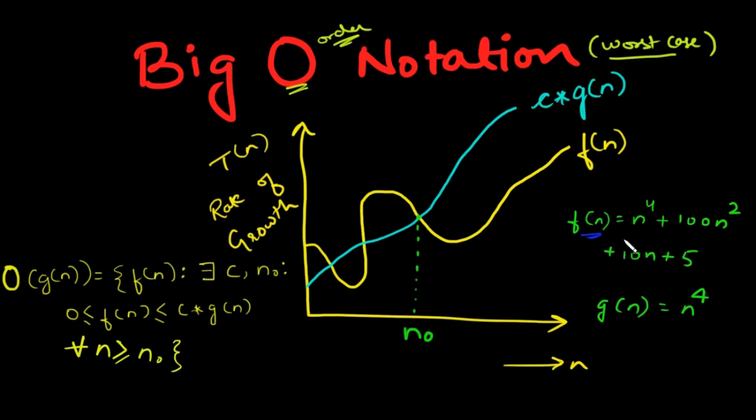Generally, it is represented as f(n) = O(g(n)). That means, at larger values of n, the upper bound of f(n) is g(n).